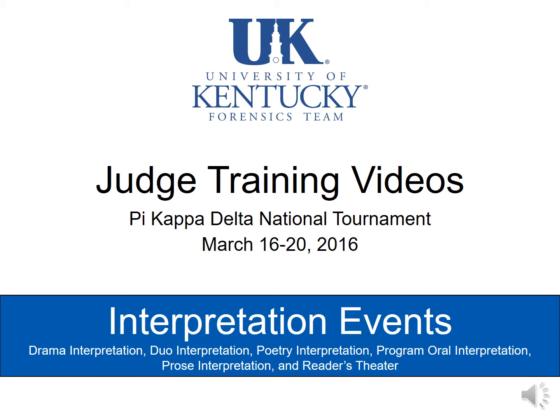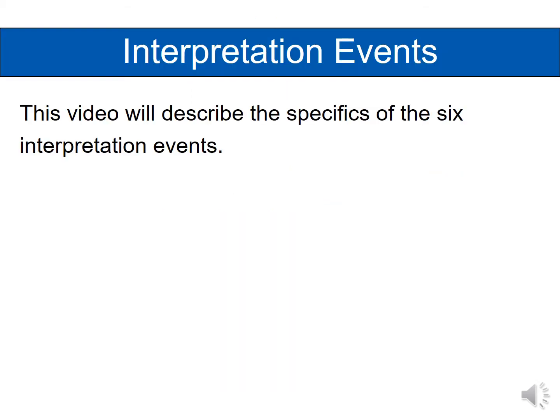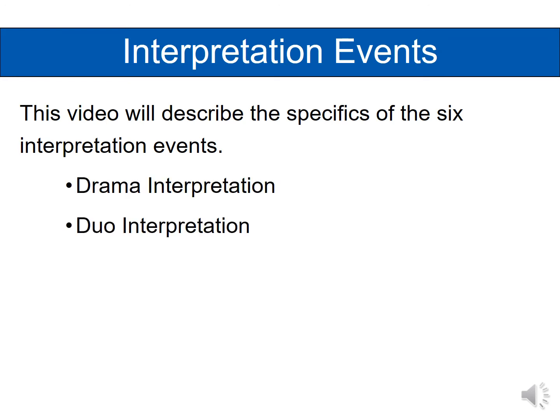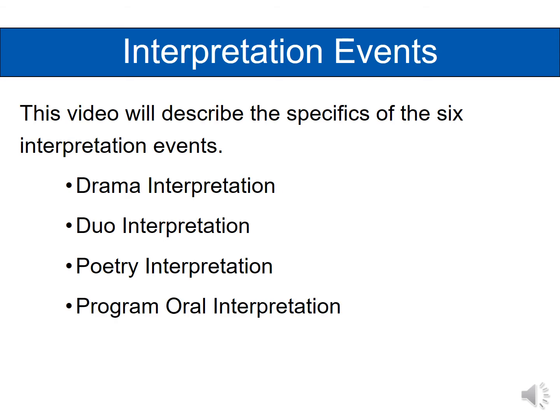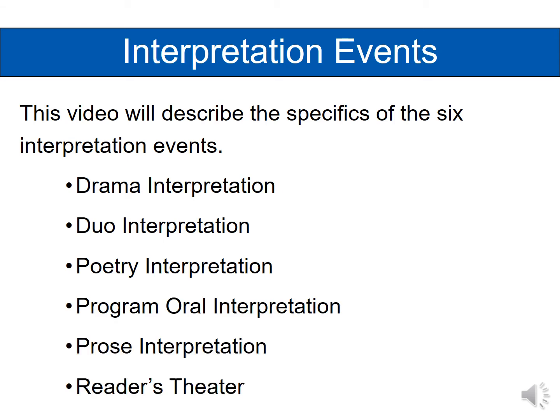Welcome to the next video in the series of judge training videos for the Pi Kappa Delta National Tournament. This video will discuss interpretation events and what to look for when judging these event categories. We'll talk about the six interpretation events: drama interpretation, duo interpretation, poetry interpretation, program oral interpretation, prose interpretation, and readers theater, including the specifics of all those events and general things to be thinking about.